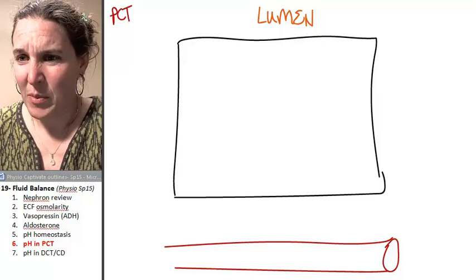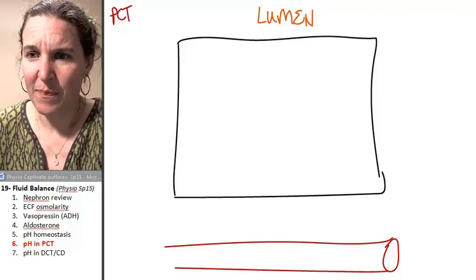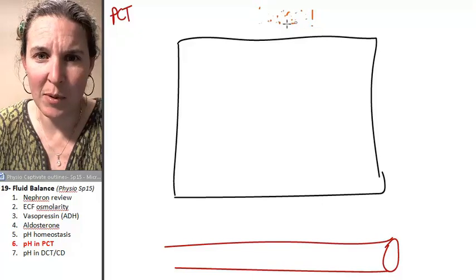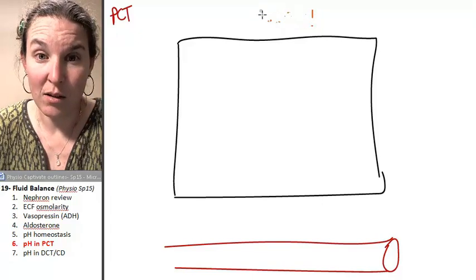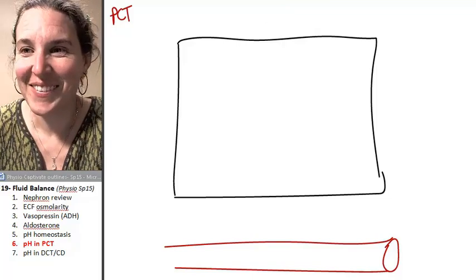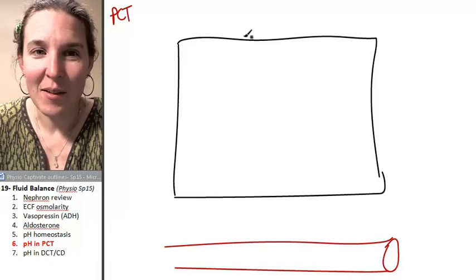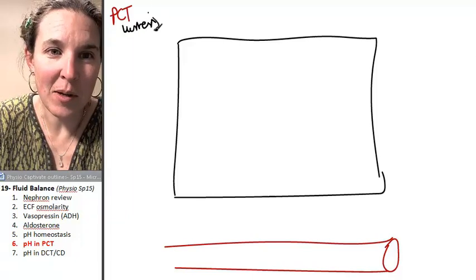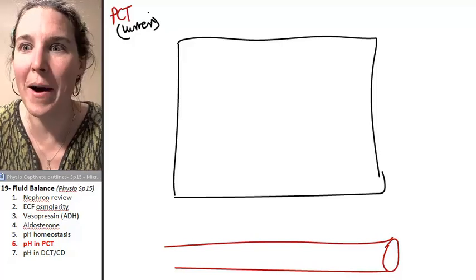So I need to erase the lumen thing because I want you to remember that it's there, but I need that space to draw things. Look at me erasing. See me erase? Okay, I'm done. But I still want you to remember that this is the lumen. I just need to be able to draw all my transporters.